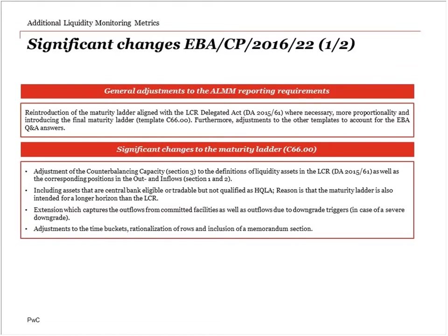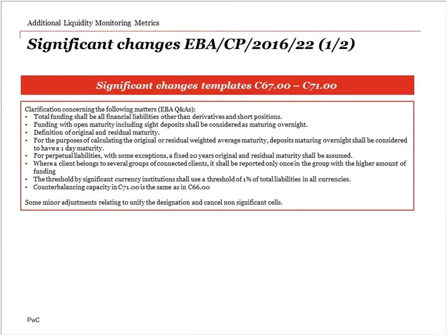Looking at the changes to the other templates — C67 to C71 — these are adjustments and clarifications to take into account answers to questions posed to the EBA when firms weren't sure how to complete the templates, to make sure everything is taken into account and the templates are revised. There is also some rationalization of the templates. That wraps up the ALMM section.